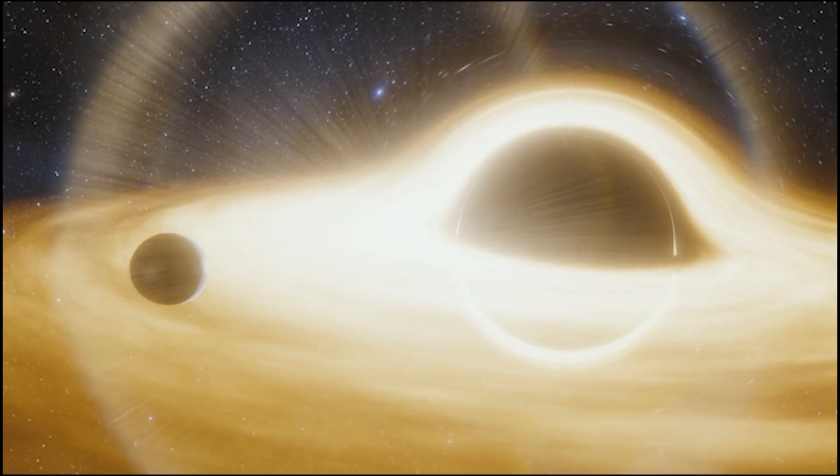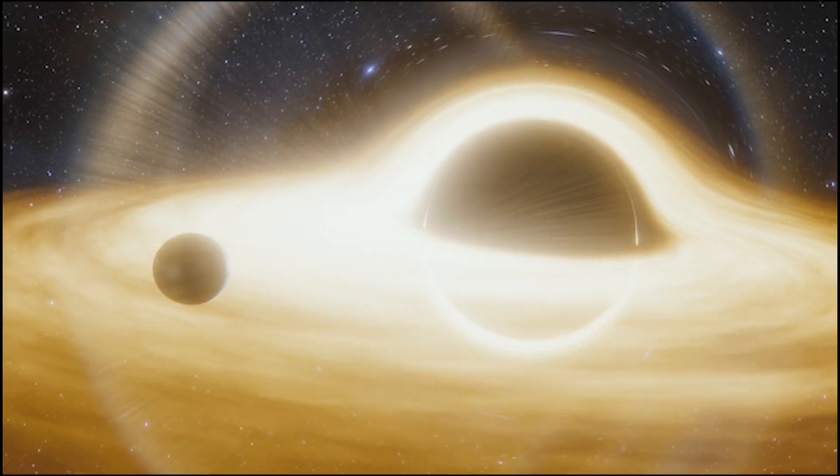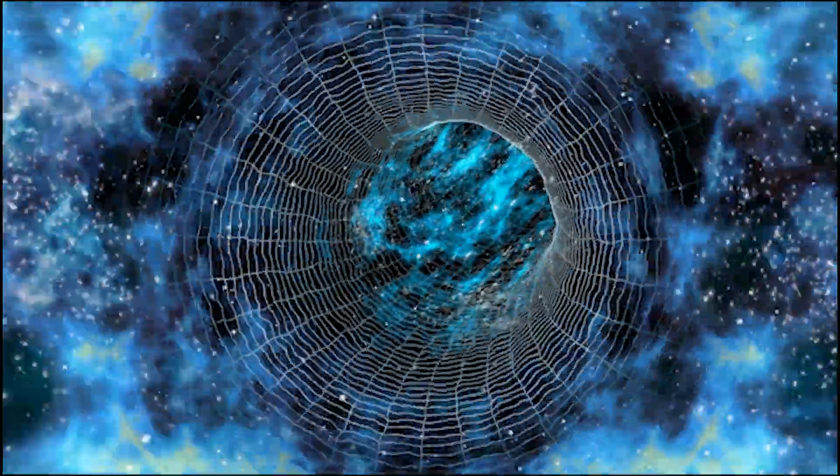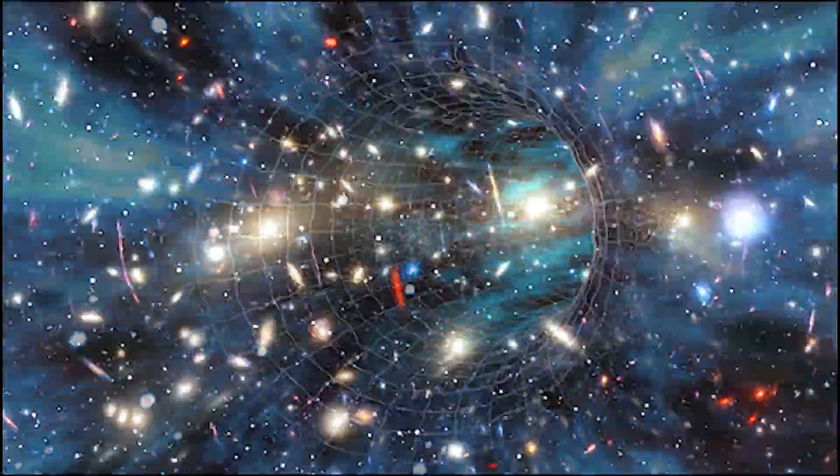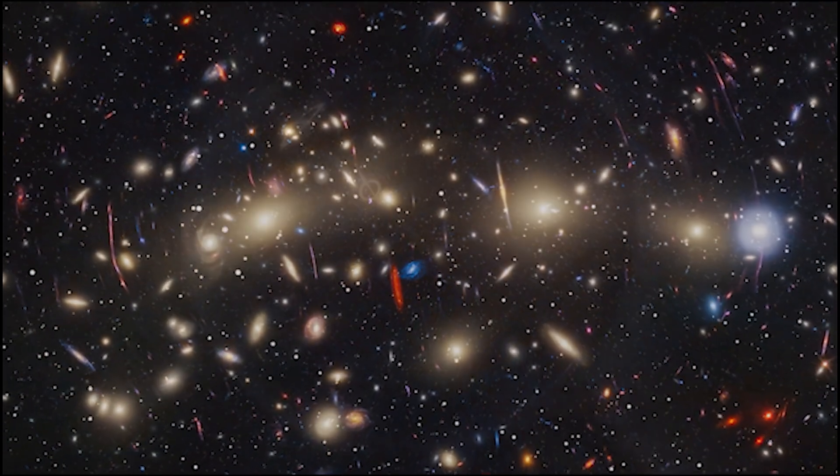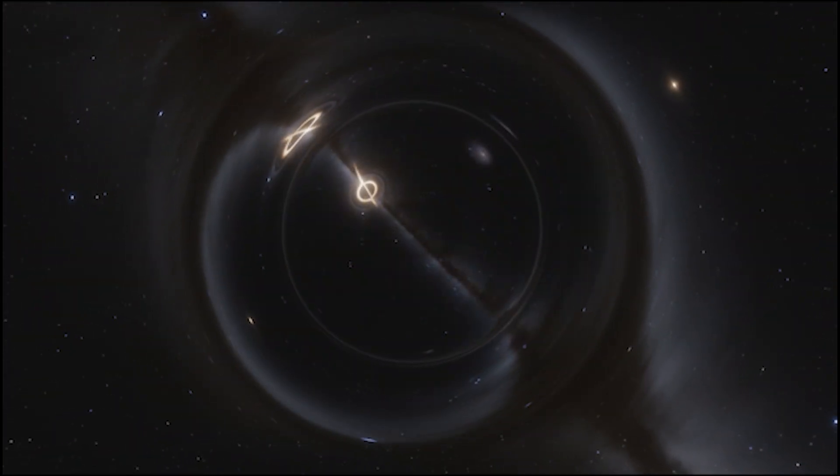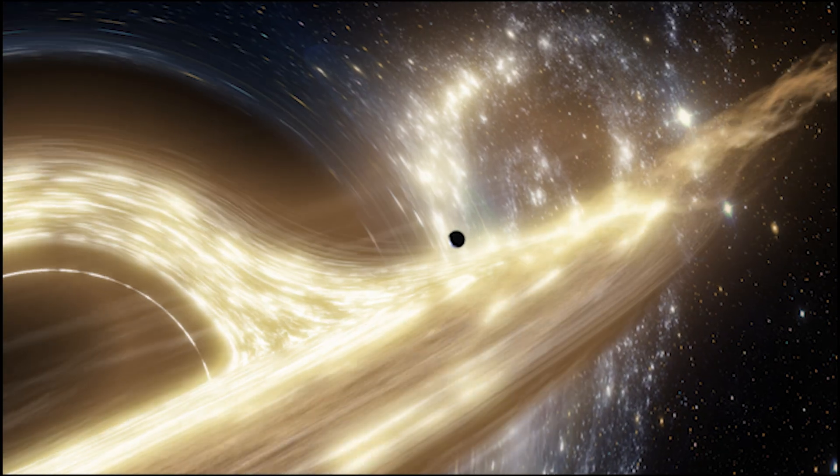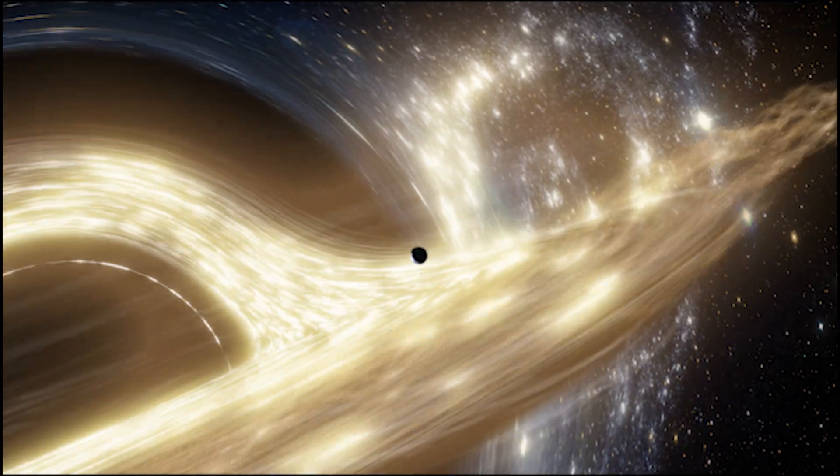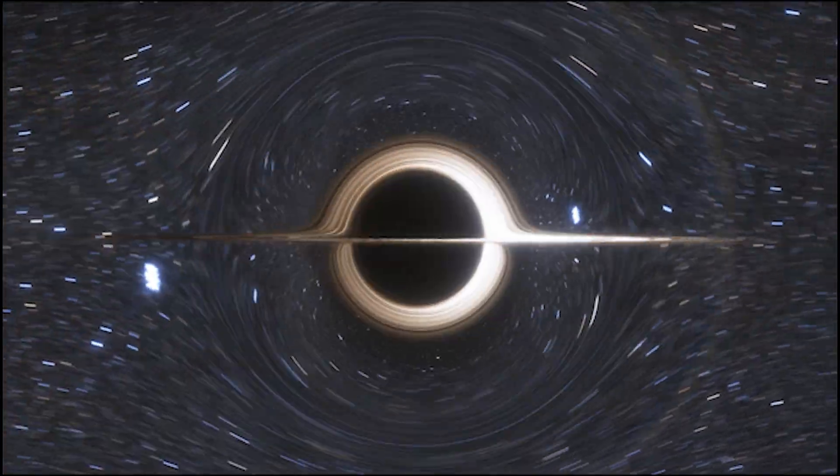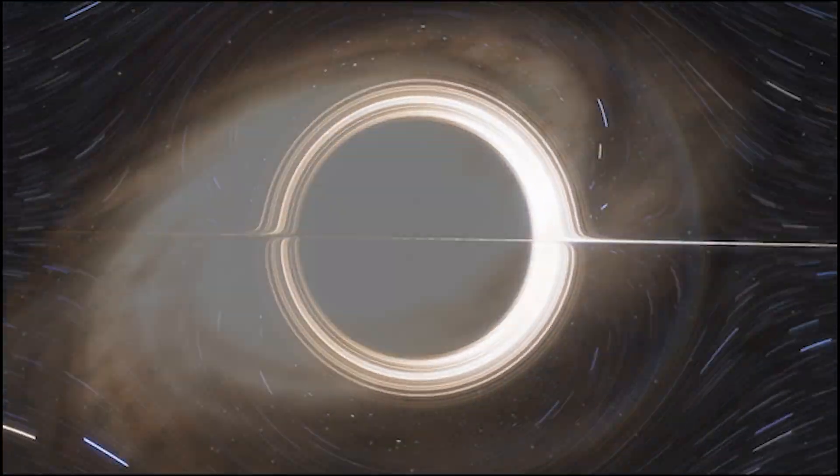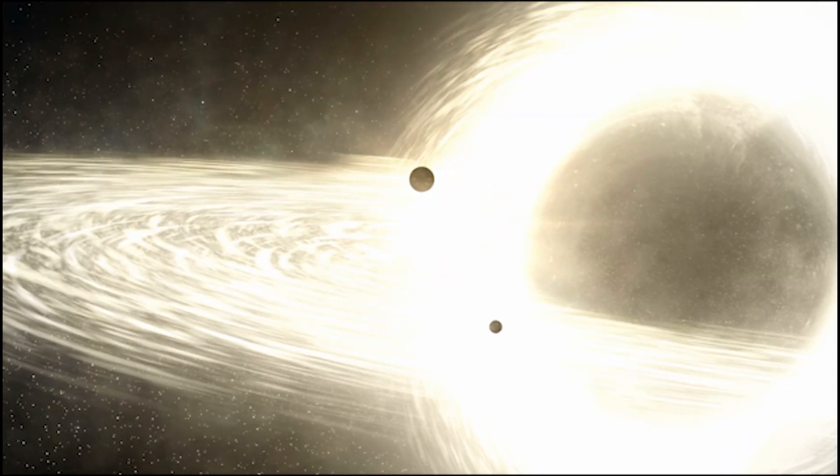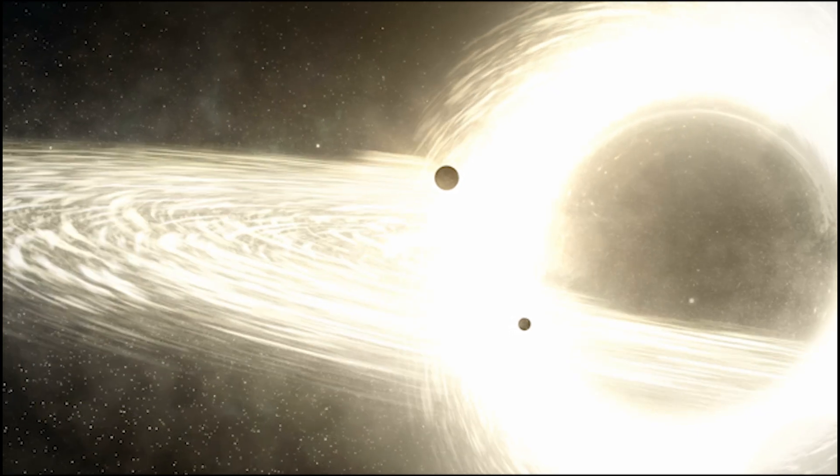This method of black hole formation could explain how supermassive black holes appeared so soon after the Big Bang and why they grew at such unprecedented rates. This discovery challenges the traditional view that black holes grew slowly by accreting matter from their surroundings over long periods. Instead, it suggests that early black holes had access to abundant gas in the young universe, allowing them to grow far more quickly than previously thought.